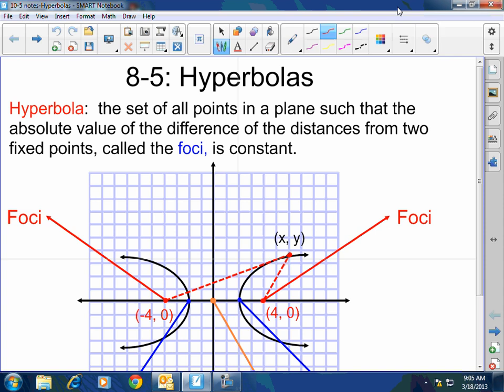What does that mean? Right, here's my foci here in red. The distance from here to this point x,y we'll call d1, and the distance from the other foci to this fixed point we'll call d2. That difference is going to be constant. The distance d1 minus d2 will always be constant.